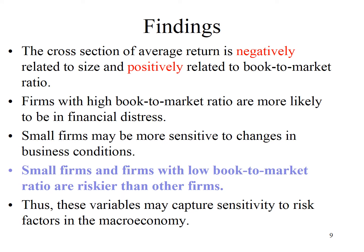How is the relationship between the three explanatory variables and stock return? The cross-section of average return is negatively related to size and positively related to book-to-market ratio. Fama and French provide the explanation that firms with high book-to-market ratio are more likely to be in financial distress. In addition, small firms may be more sensitive to changes in business conditions. Thus, these variables may capture sensitivity to risk factors in the macroeconomy.